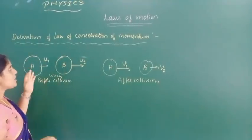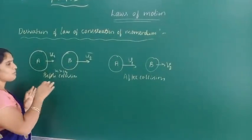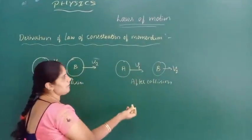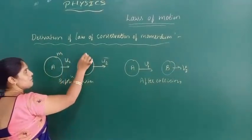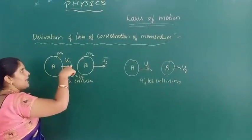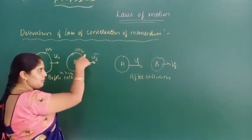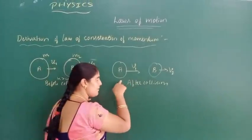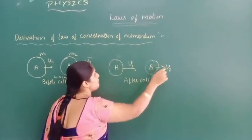Now we shall prove the law of conservation of momentum. That means total momentum before collision is equal to total momentum after collision. Object A has mass M1 and object B has mass M2. The initial momentum of A is M1·U1 and initial momentum of B is M2·U2, because momentum is the product of mass and velocity. Final momentum of A is M1·V1 and final momentum of B is M2·V2.